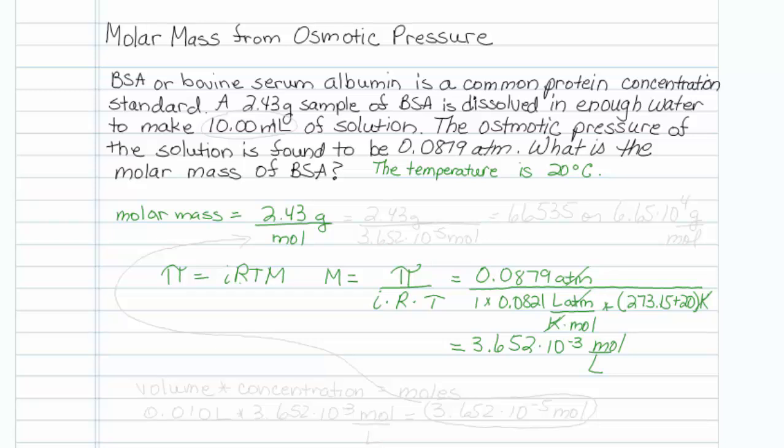If we have a volume and a concentration, we can get ourselves some moles. So our volume is 10 mL, right, where is that, right up there. And I'm going to write that in liters, 0.01 liters. Our concentration we just figured out as 3.652 times 10 to the minus 3 mole per liter. So it turns out that we have 3.652 times 10 to the minus 5 moles.